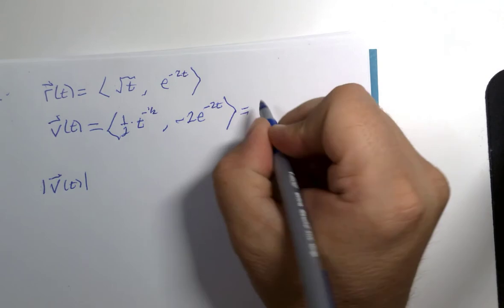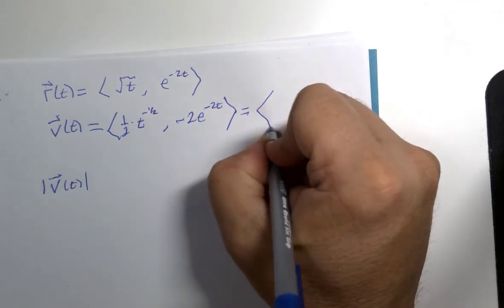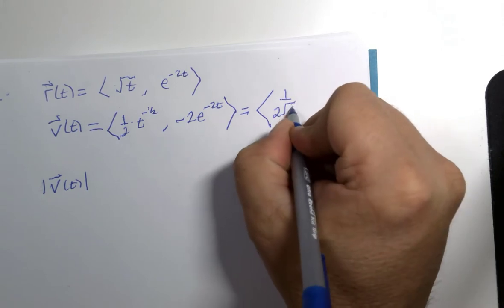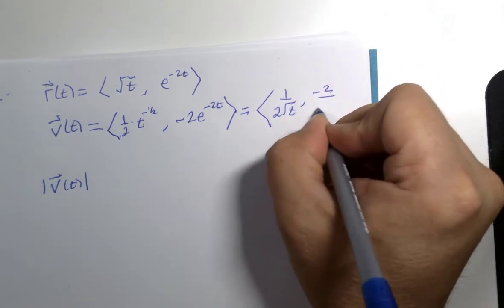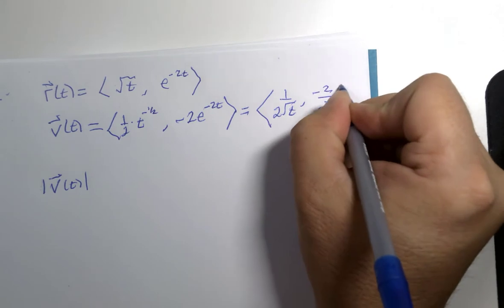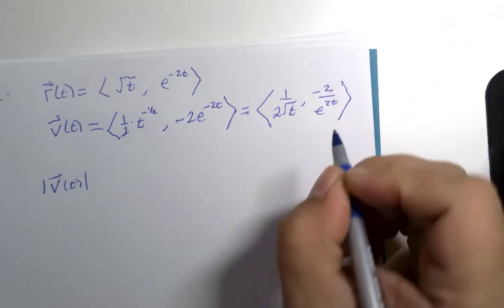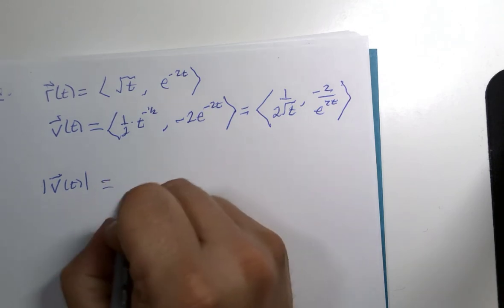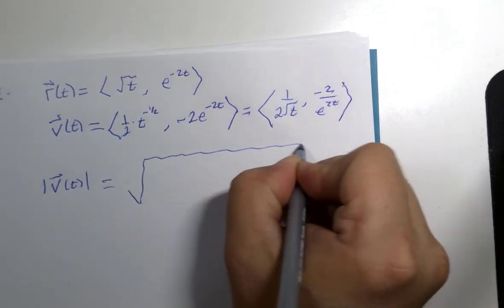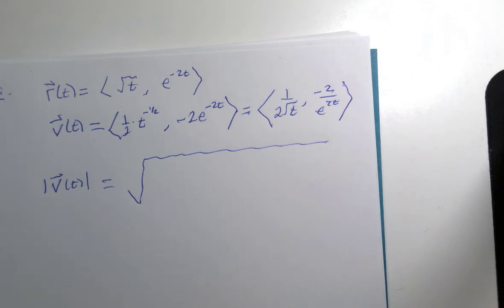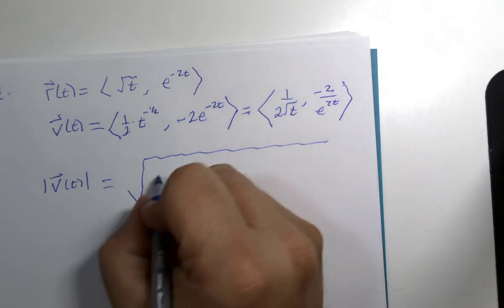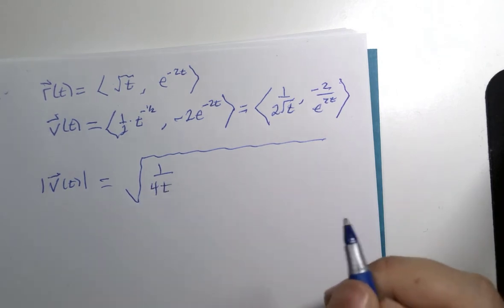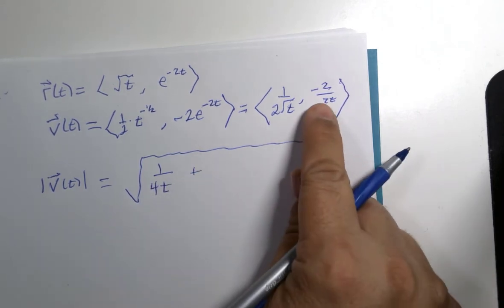And that would be equivalent to 1 over 2 root t and negative 2 over e to the 2t. The magnitude of that vector, let's see, if we square this, we would get 1 over, that's right, 4t, plus, when you square this, you'll get 4 over e.